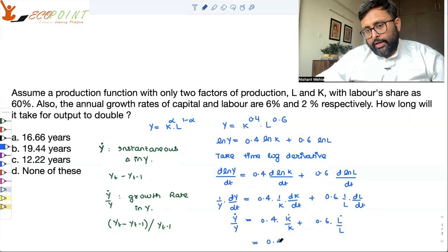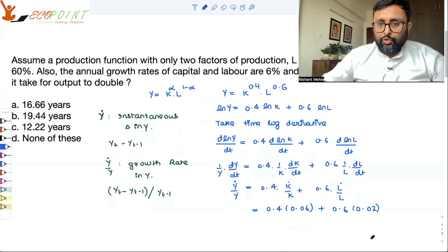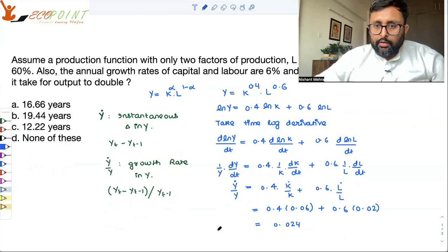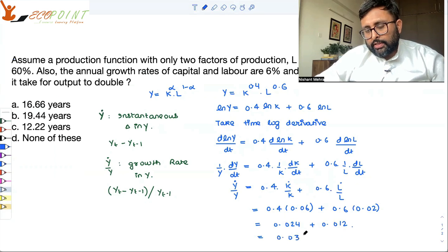But you are given that the growth rates of capital and labor are 6% and 2%. So, growth rate of capital is 6%, which is 0.06. Growth rate of labor is 2%, which is 0.02. So, this thing will come out to be 0.024.